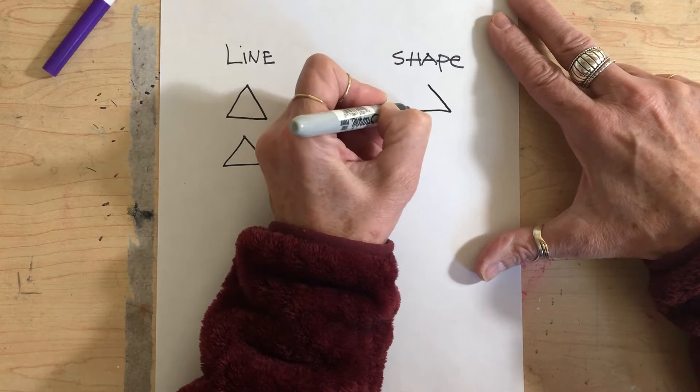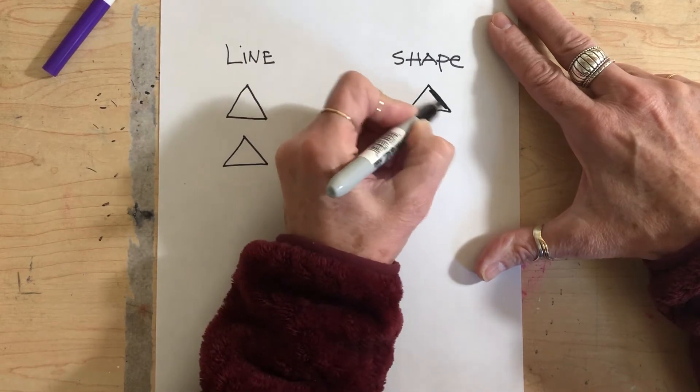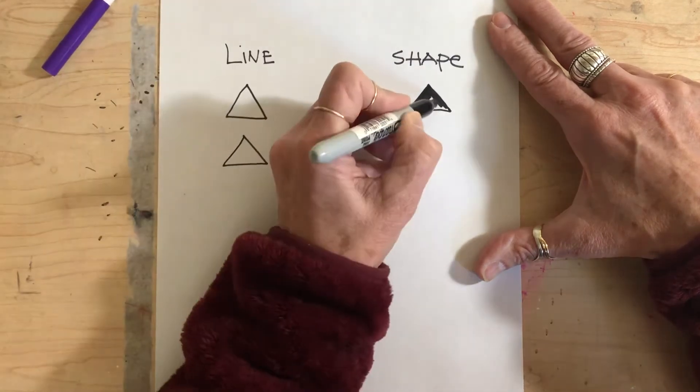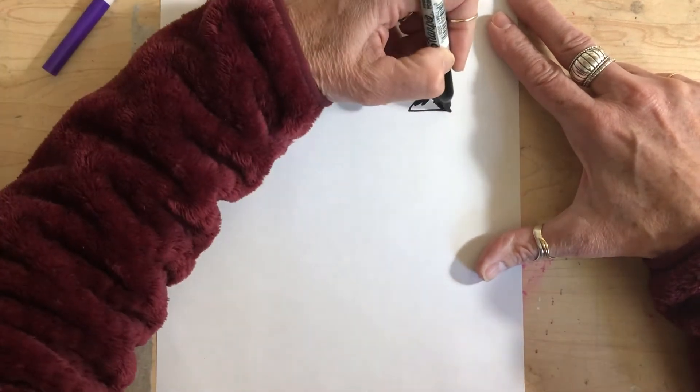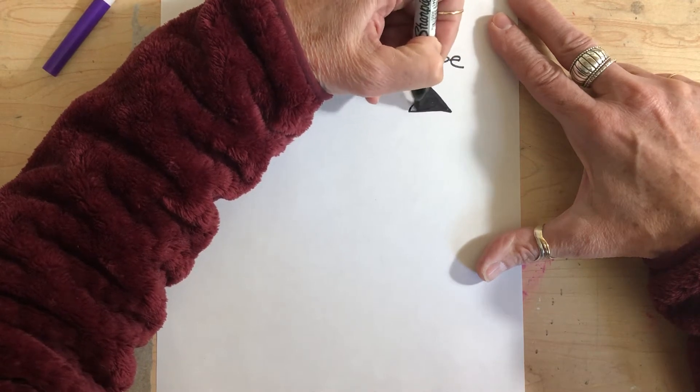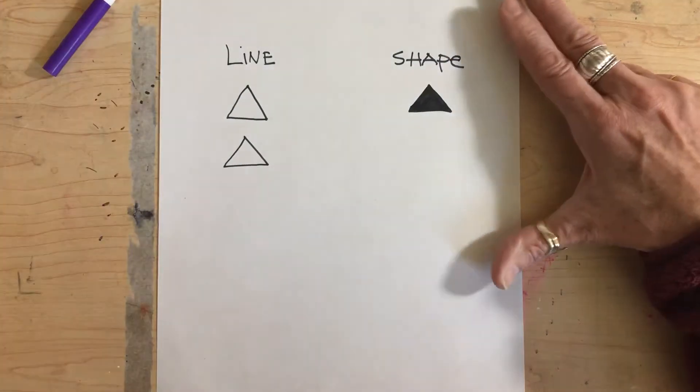This is a shape, and it doesn't have to be black, it just can't have an outline. But in this case, I'm using a black marker, so we have a black shape.